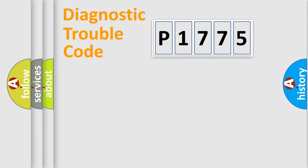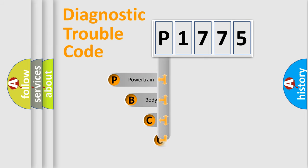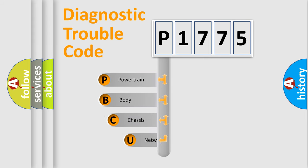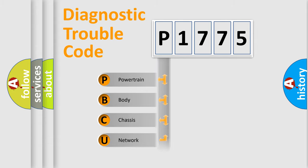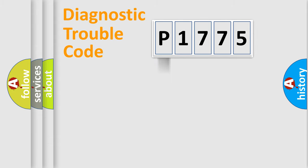Let's look at the history of diagnostic fault code composition according to the OBD2 protocol, which is unified for all automakers since 2000. We divide the electric system of the automobile into four basic units: Powertrain, body, chassis, and network.